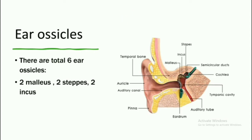Next are the ear ossicles. There are three bones in each ear: malleus, incus, and stapes — giving a total of six bones. When vibrations of sound enter the auditory canal, they pressurize the tympanic cavity, passing from malleus to incus and then to stapes. The stapes is the smallest bone of the human body.